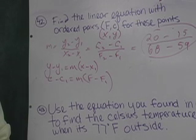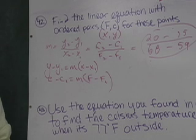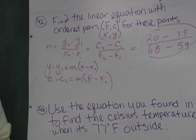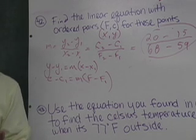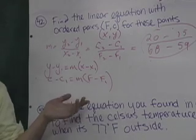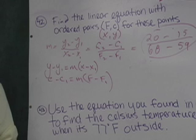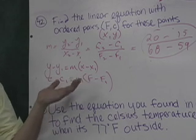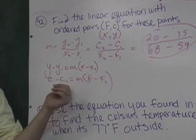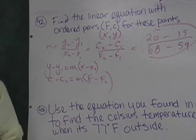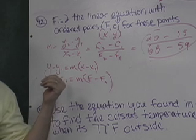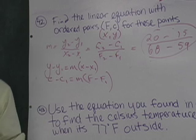You use the point-slope equation when you're given the slope and one point — or if you're given two points, that's fine too, because with two points you find the slope and then use one of the points. Remember, you don't have to use point-slope unless they tell you to. You could use Y equals MX plus B as well. Either way works. You do need to know both ways.